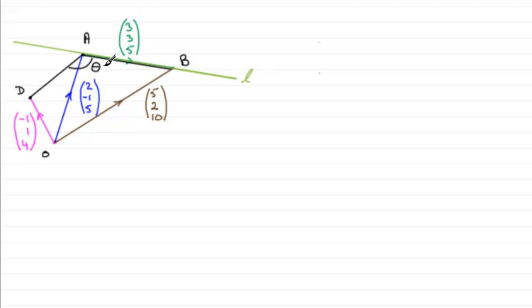Now, you should be familiar with how we find the angle between two vectors. We use the scalar product, or some people call it the dot product. And we use it in this formula cos theta equals two vectors dotted together. And it's very important that the vectors that we dot together come away from the angle. In other words, we need this vector A to D and we need the vector A to B.